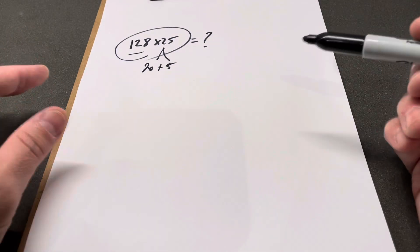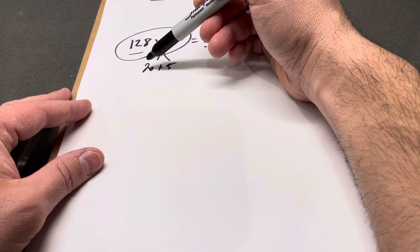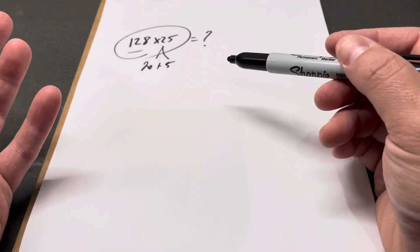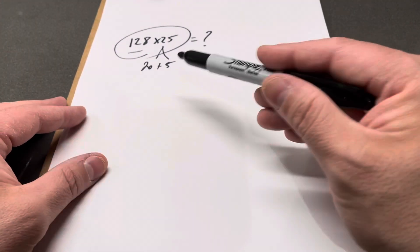Essentially what I do in my head is multiply 128 by 20, then 128 by 5, and I add those two answers together. The hardest part about this method is just keeping the answers for each of these in your head.